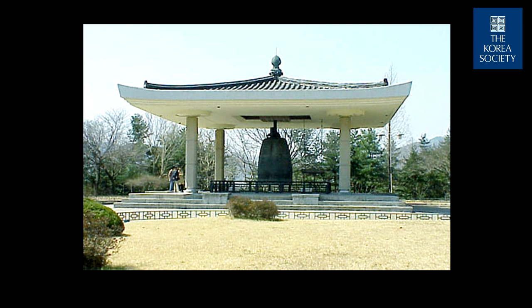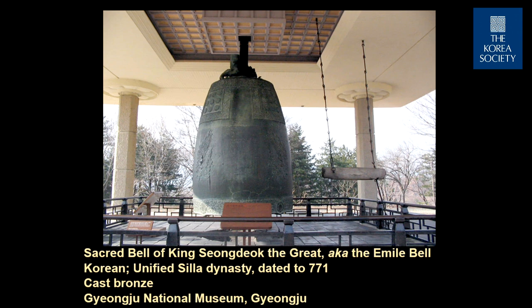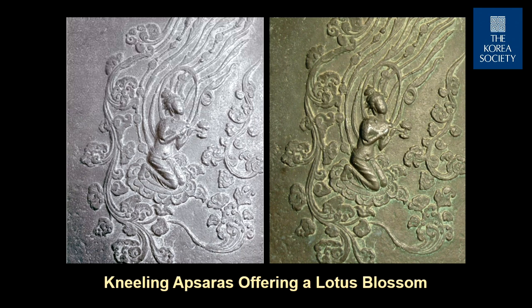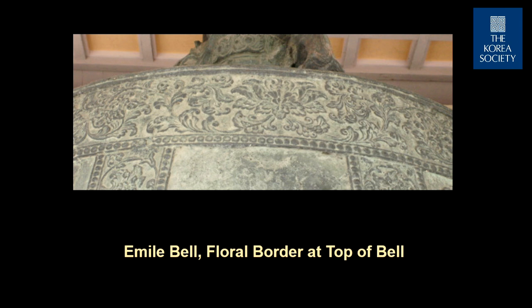The bell is struck from the outside, has a beautiful sound, and the surface is embellished with wonderful Apsaras — angelic-like figures that hold their hands in an attitude of adoration. They're a little bit worn from people touching them over the centuries, but particularly at the top, floral decoration of peonies and other flowers — where it's so tall that no one's touched it — they've remained in very, very good condition.